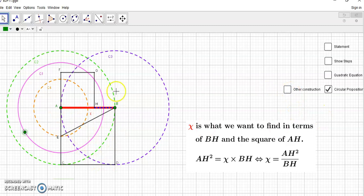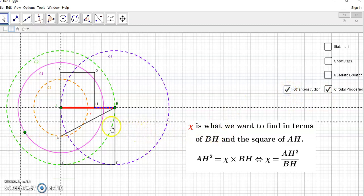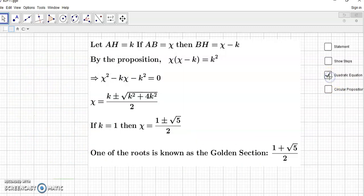And, of course, you have the final one, which is the other constructions. And these dotted lines here will show you how you can obtain this particular diagram so that you can find H in terms of BH, and the square of AH. In other words, AH squared is equal to H times BH. So that's really what you're looking at.